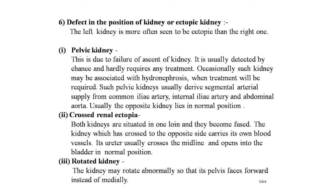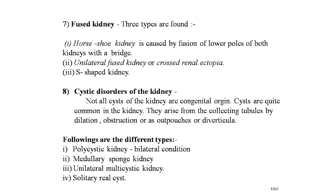The seventh congenital anomaly is the fused kidney, of which three types are found: first is the horseshoe kidney, second is the unilateral fused kidney, and third is the S-shaped kidney. The horseshoe kidney is caused by fusion of the lower poles of both kidneys with a bridge, giving it a horseshoe shape. Unilateral fused kidney or cross renal ectopia has been described under cross renal ectopia.